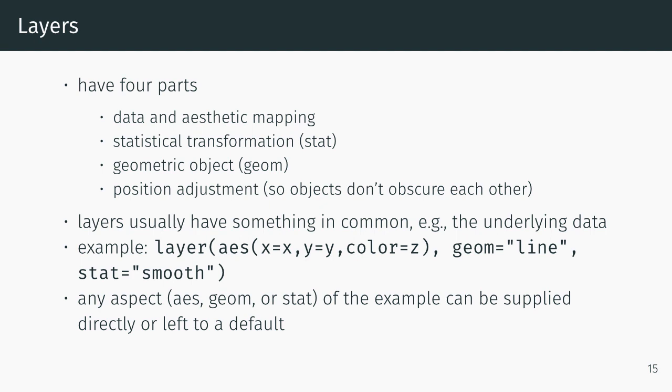Layers have something in common, for example the underlying data. If we think back to the plot we did before, we have x and y coordinates and potentially color. The first x, the first y, and the word color are all part of the specification. The second x, the second y, and z are all just names of columns of data.